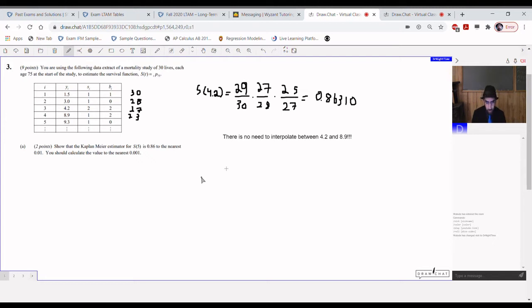So it's a standard Kaplan-Meier question. You're using the following data extract of a mortality study of 30 lives each age 75 at the start of the study to estimate the survival function S(t) equals P_75t. Part A is Kaplan-Meier estimate for S(5), that is the probability that this 75-year-old lives another five years, is 0.86 to the nearest 0.01. You should calculate the value to the nearest 0.001.